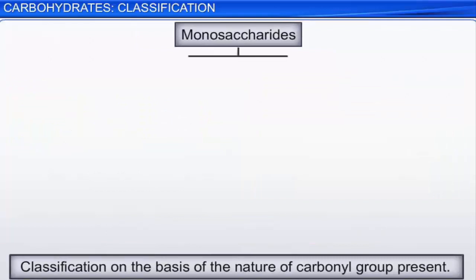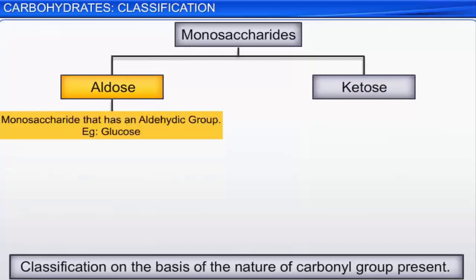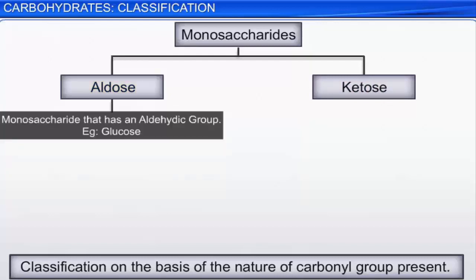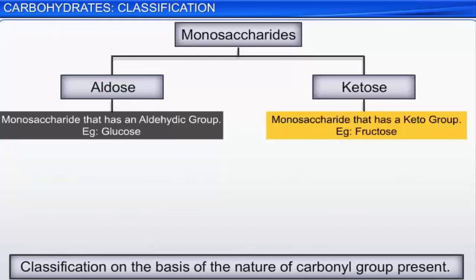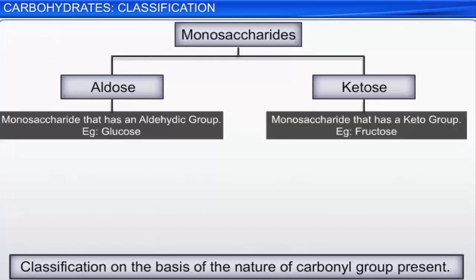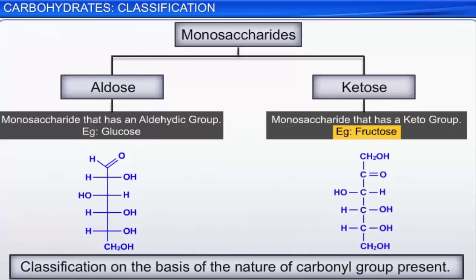Monosaccharides can be further classified into two major categories on the basis of the nature of the carbonyl group present: aldoses and ketoses. The term aldose is used to describe a monosaccharide that has an aldehydic group. The term ketose is used to describe a monosaccharide that has a keto group. For example, glucose is an aldose, while fructose is a ketose.